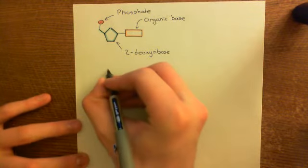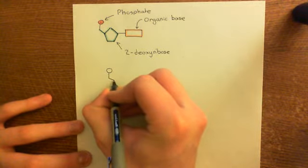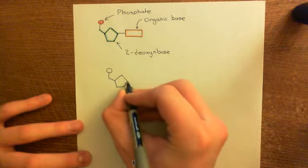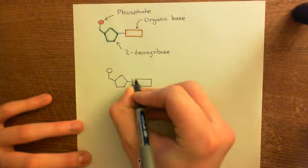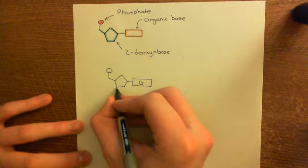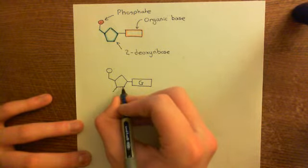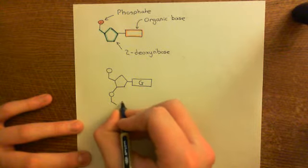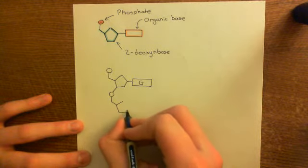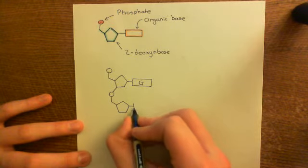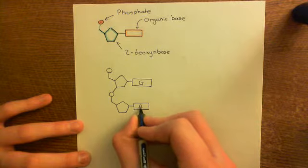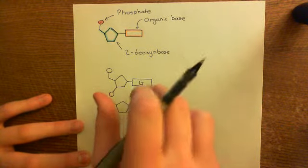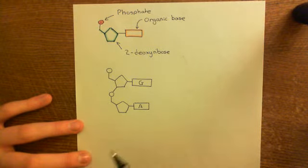Let's start with the single strand of DNA. Here comes our first nucleotide - we'll only do a two-nucleotide-long piece of DNA, otherwise it'll take far too long. Here is the deoxyribose sugar, here is the organic base, and we'll give it a specific organic base - guanine, denoted by G. Then off the third carbon of this deoxyribose sugar, you attach the phosphate group of the nucleotide below. Here comes that nucleotide with its pentameric 2-deoxyribose sugar and an organic base sticking off the side - let's have adenine, A.